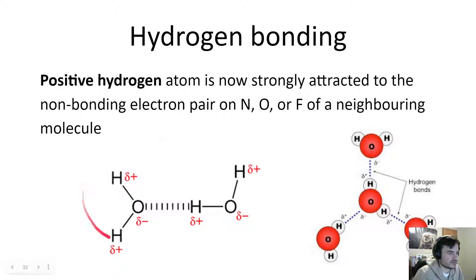Here we have an example of this. So we have a hydrogen and oxygen bond. Very polarized, because the electronegativity of oxygen is so high. It's like a permanent dipole-dipole attraction, but even stronger. Positive hydrogen atoms are now strongly attracted to the non-bonding electron pairs of nitrogen, oxygen, or fluorine of a neighboring molecule.